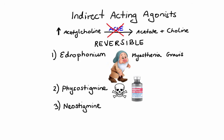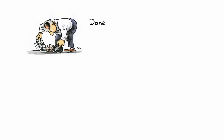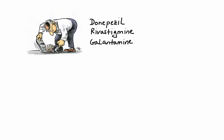Neostigmine is typically used for symptoms of myasthenia gravis, and can also be used to stimulate the bladder and GI tract and to reverse the effects of anesthesia from neuromuscular blocking agents. Pyridostigmine is another agent very similar to neostigmine that produces very similar effects. Donepezil, rivastigmine, and galantamine are agents used to ease the symptoms of Alzheimer's disease. Since reduction in cholinergic neuron activity is a well-known feature of Alzheimer's disease, these agents enhance cholinergic effects and lead to somewhat improved cognitive function, though unfortunately none of them can stop the progression of the disease.